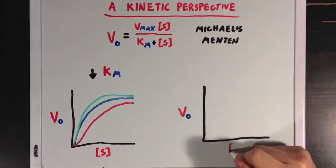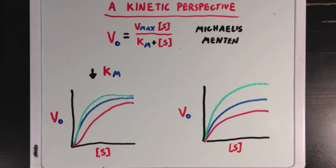Now in this next example, we have the same three colored curves, but instead of KM changing significantly, the regulators seem to be changing Vmax, with the activator increasing the Vmax value.